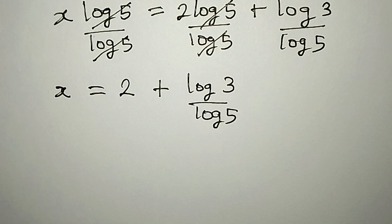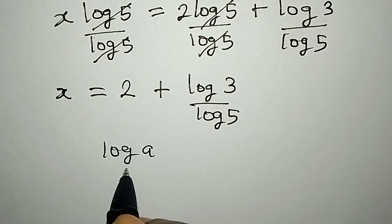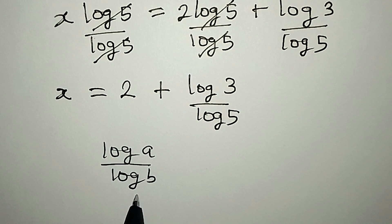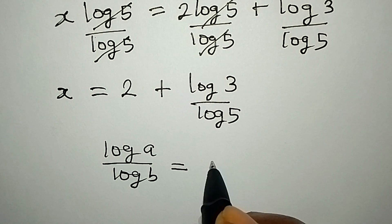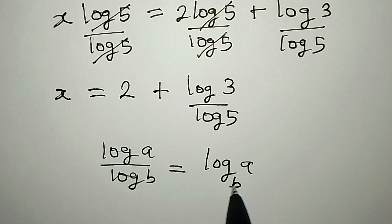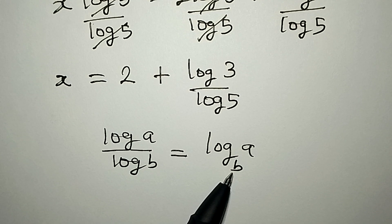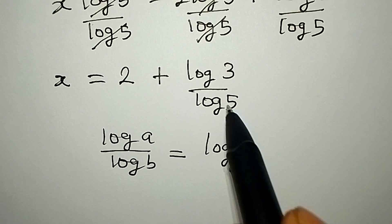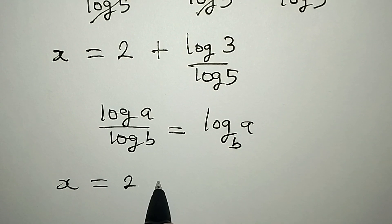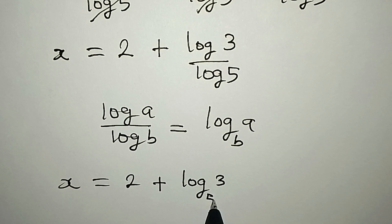Now let's look at the change of base law: if you have log a over log b, because they share the same base, this equals log a to base b. The denominator becomes the base. Applying that here, x equals 2 plus log 3 to base 5.